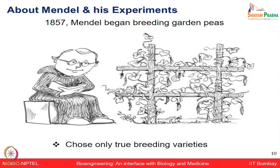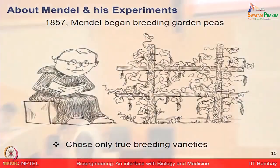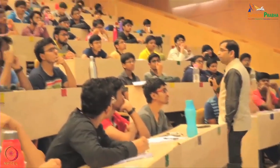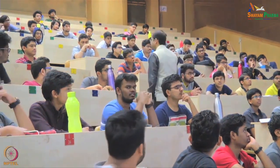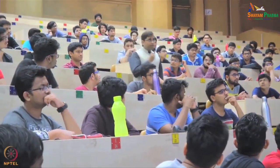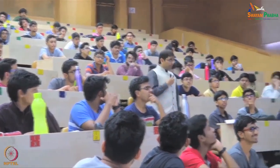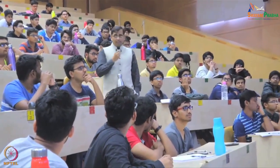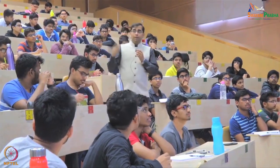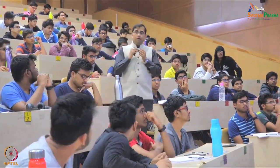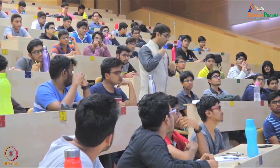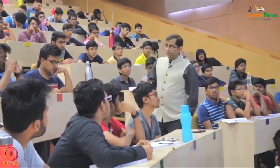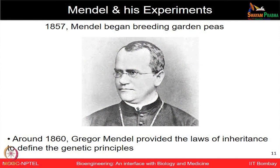He chose only true breeding varieties. What is the true breeding variety and why did he need to choose it? True breeding means homozygous — you are ensuring that if purple color came, you are crossing purple with purple and getting purple progenies. They are not segregating across generations. He was choosing those characteristics and plants that contain the same characteristics from one to the next generation.